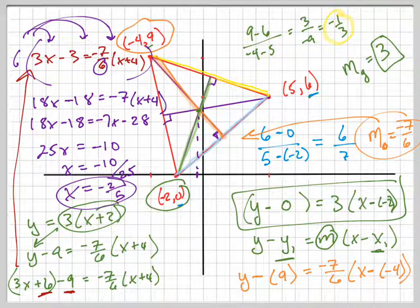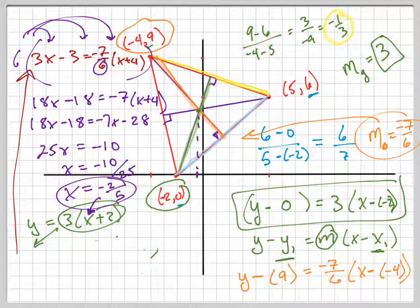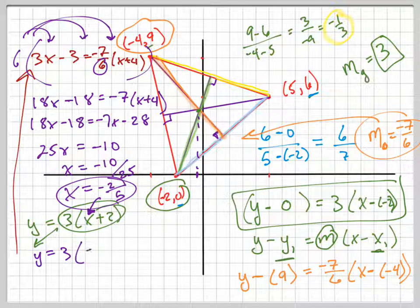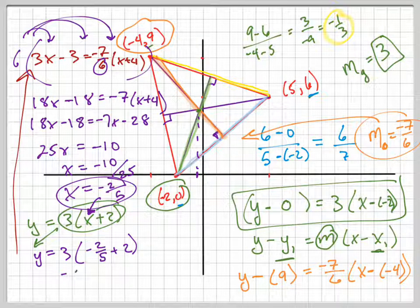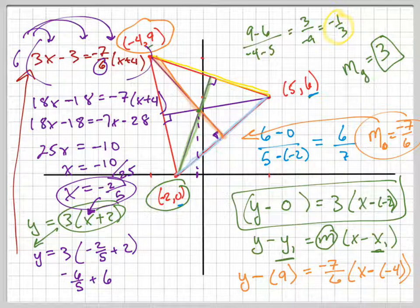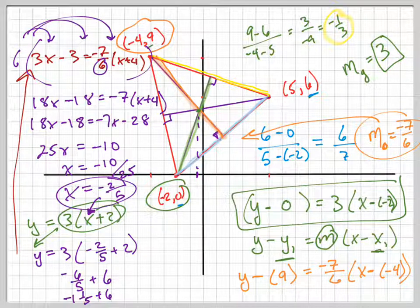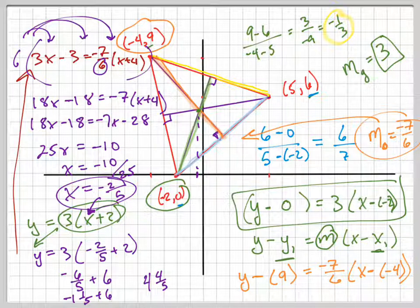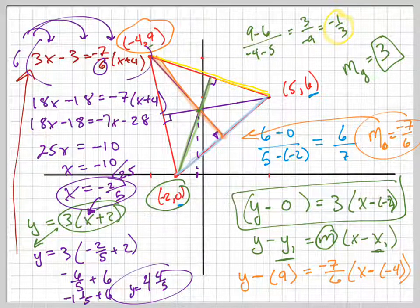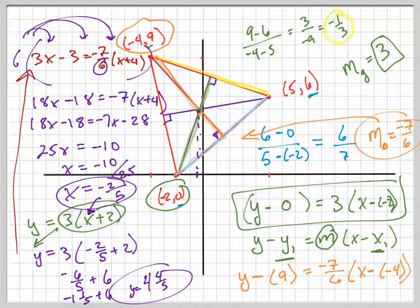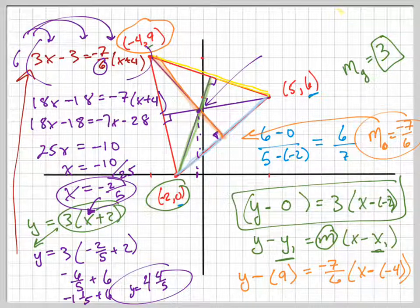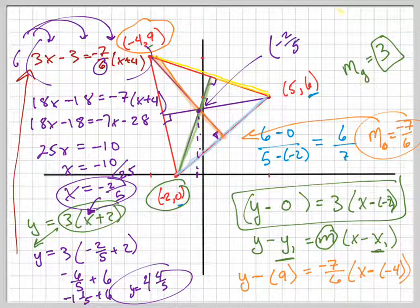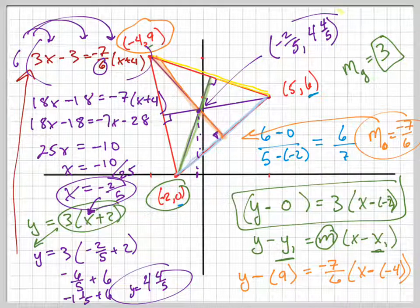Negative 2 fifths is my X coordinate. And my Y coordinate, plug that back in right here. So Y equals 3 times negative 2 fifths plus 2. So that means negative 6 fifths plus 6. Negative 6 fifths is negative 1 and a fifth plus 6. So I'm subtracting 1 and a fifth from 6. So I have 4 and 4 fifths. Does that seem about right? 1, 2, 3, 4. Hey! 4 and 4 fifths. How about that? It's good when it looks right. So that point right there, which is again called the orthocenter, is negative 2 fifths, comma, 4 and 4 fifths. I'm done.